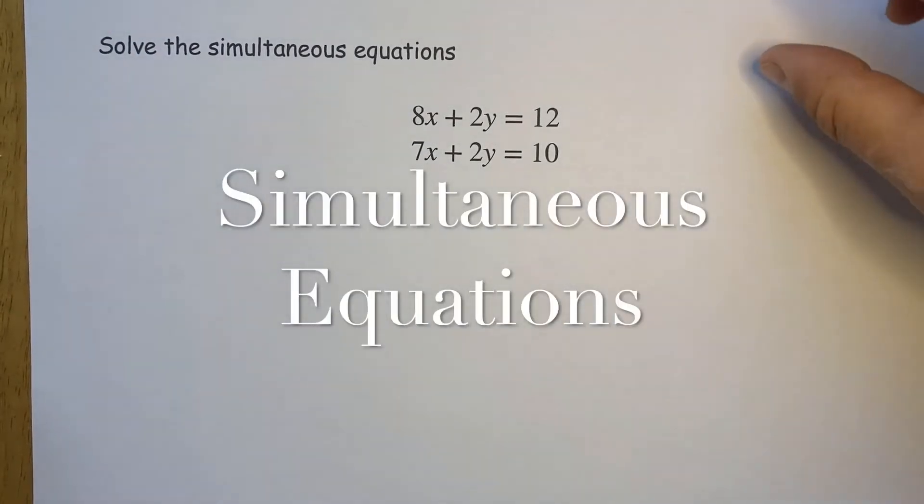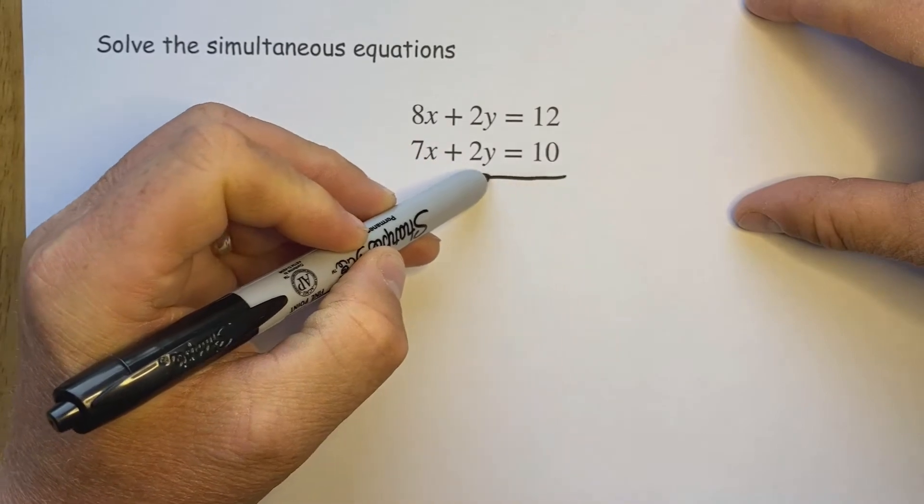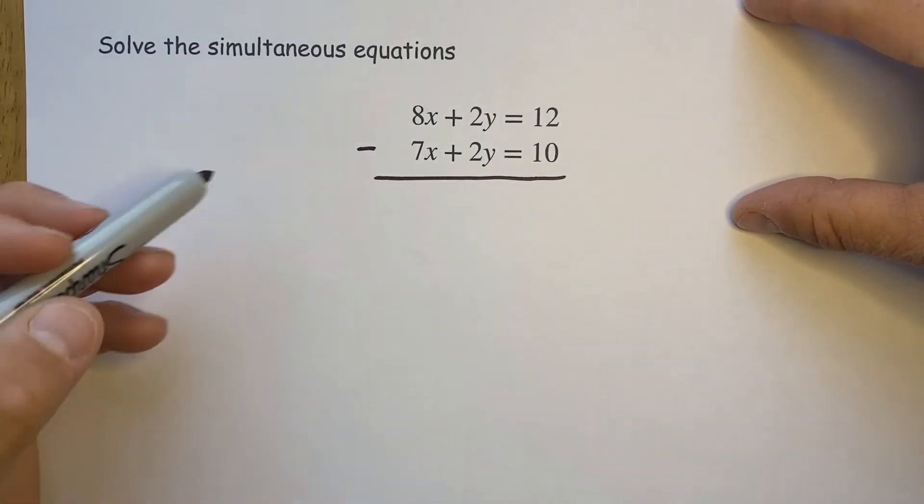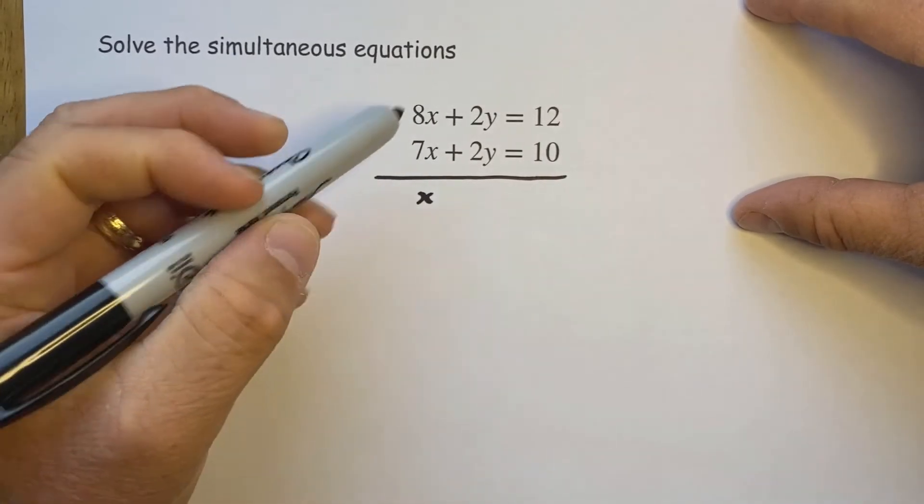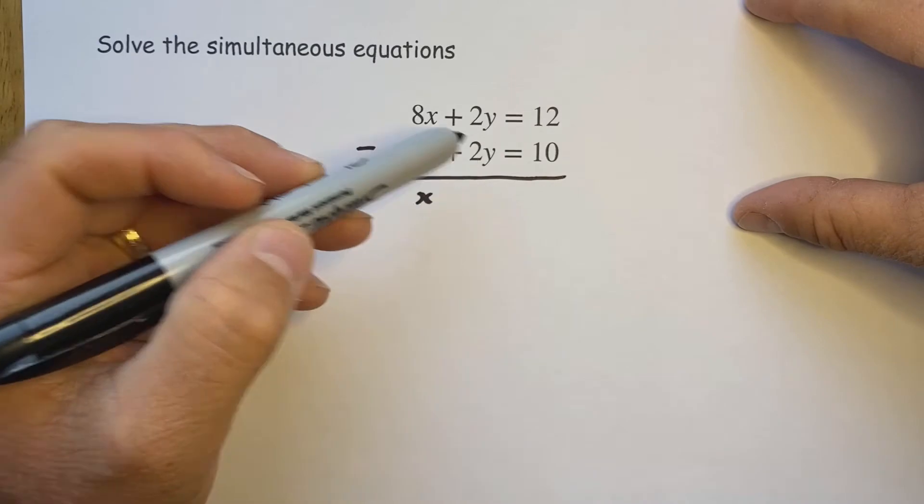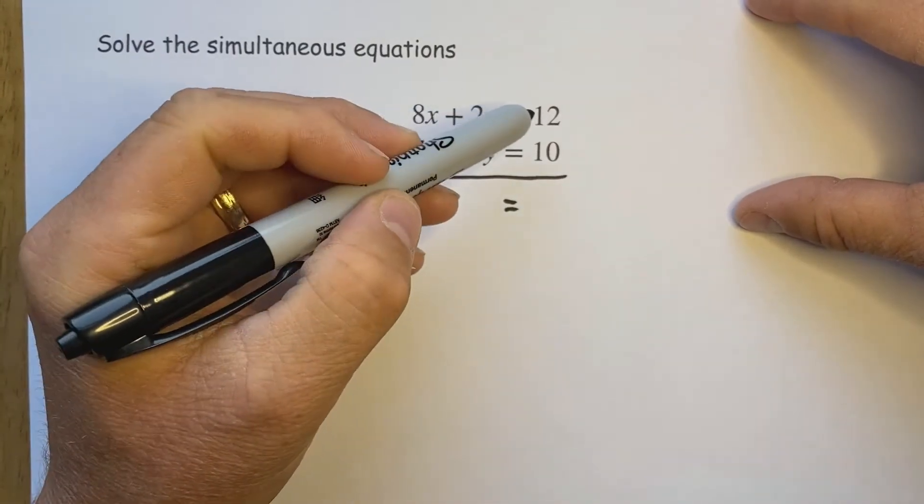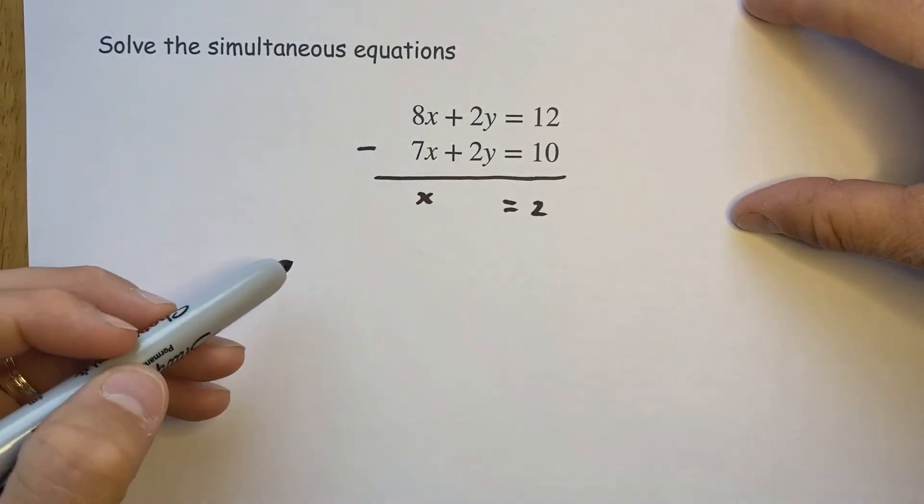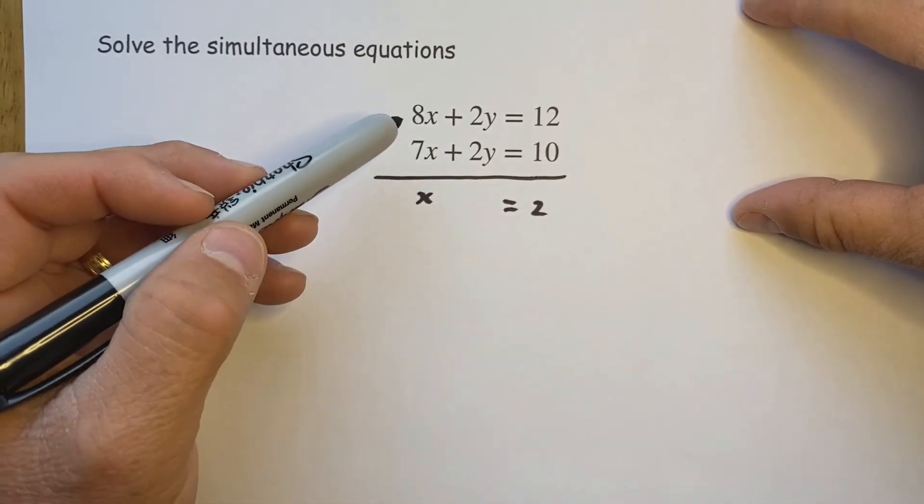However, this set of equations can be solved by subtracting the two equations. 8x take 7x is 1x, 2y take 2y gone, eliminated, and 12 take 10 is 2. So x is equal to 2.